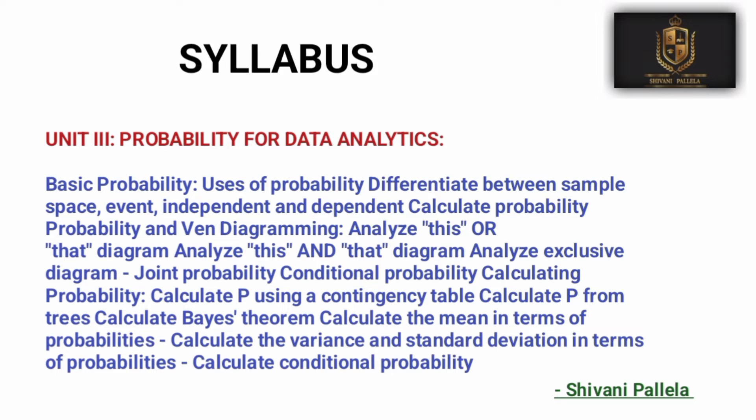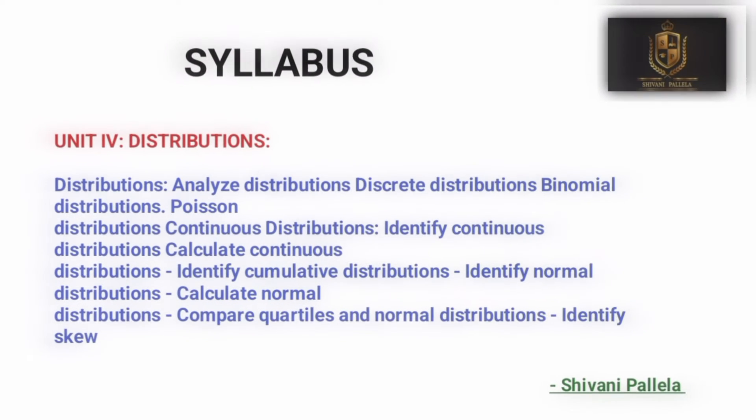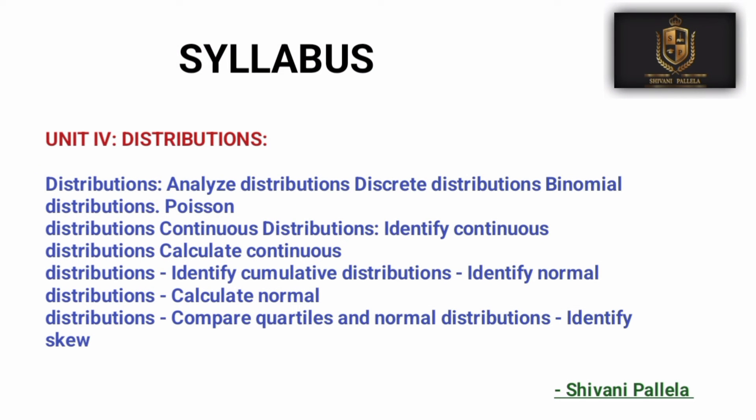Unit 3 is probability for data analytics, also a lengthy chapter. Learn to differentiate between sample space, event, and independent events. You should also learn the problematic side — for example, calculating conditional probability, which is one of the important questions.